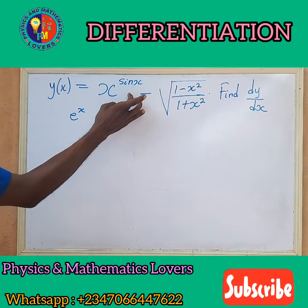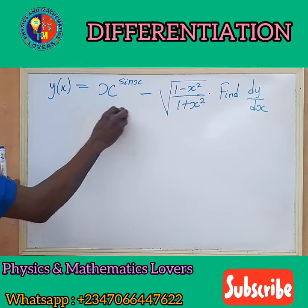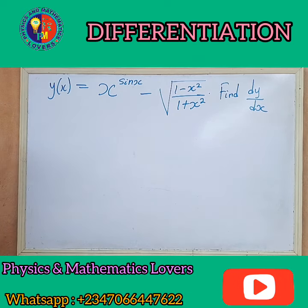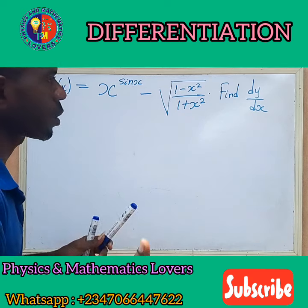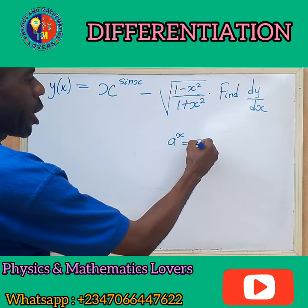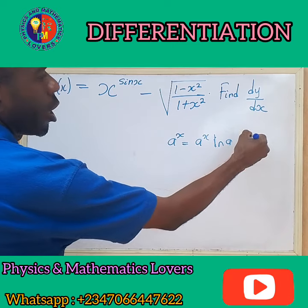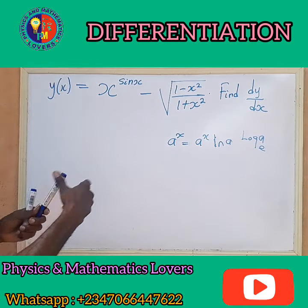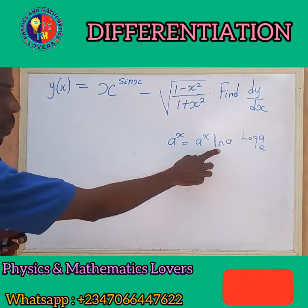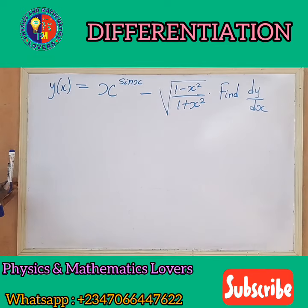Now let's first solve this and rewrite the solution. Watch carefully as we solve this. To rewrite this to have a standard derivative — remember there is one standard law: if I have a raised to the power x, the derivative of that involves log a to base e. So this rule is only for numbers; a here is a number, not a variable. So it means we cannot apply this rule here, which is why we need to find another means to demystify this question.